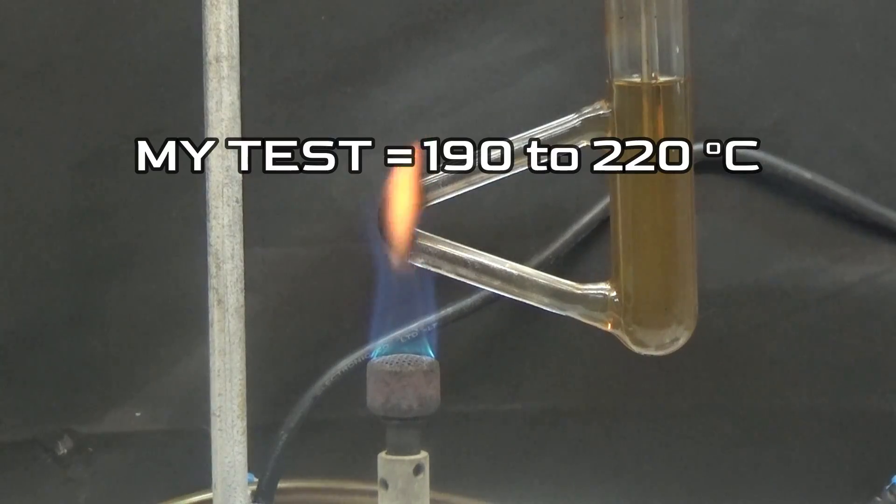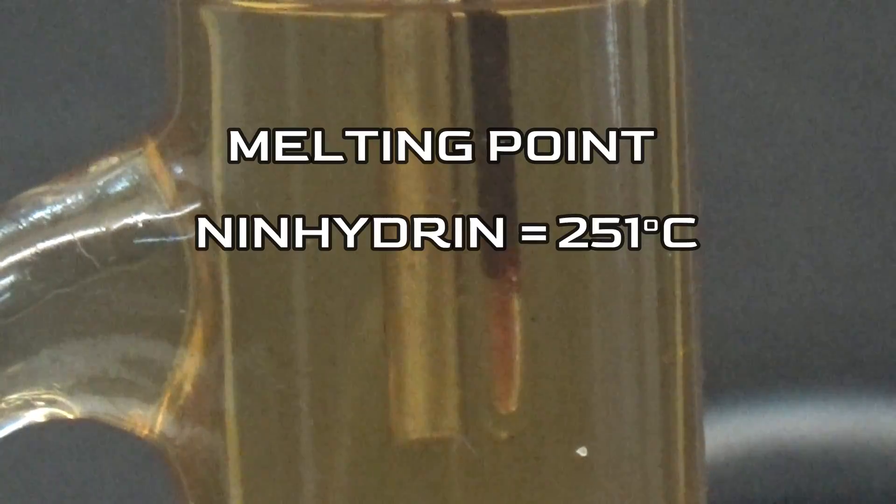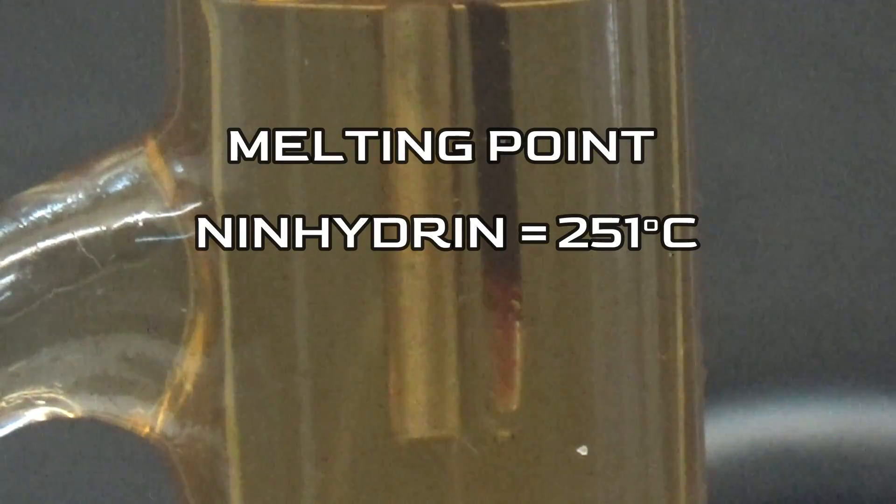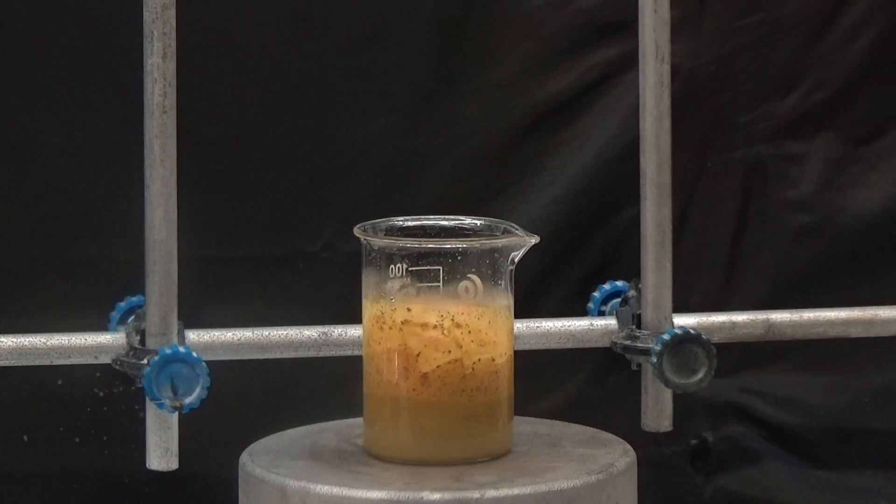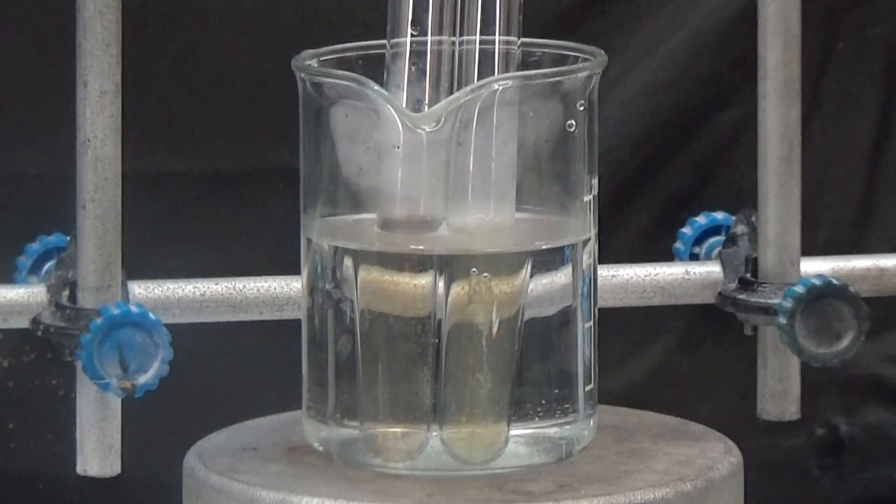The melting point of ninhydrin was determined to have a purity of 190 to 220 degrees. The ideal temperature for pure ninhydrin is 251 degrees. The ninhydrin obtained may be contaminated with residues from the reaction. I tried to purify it by recrystallizing it in various solvents, but there was no success. Finally, I was satisfied with the positive result as a reagent for amino acids.